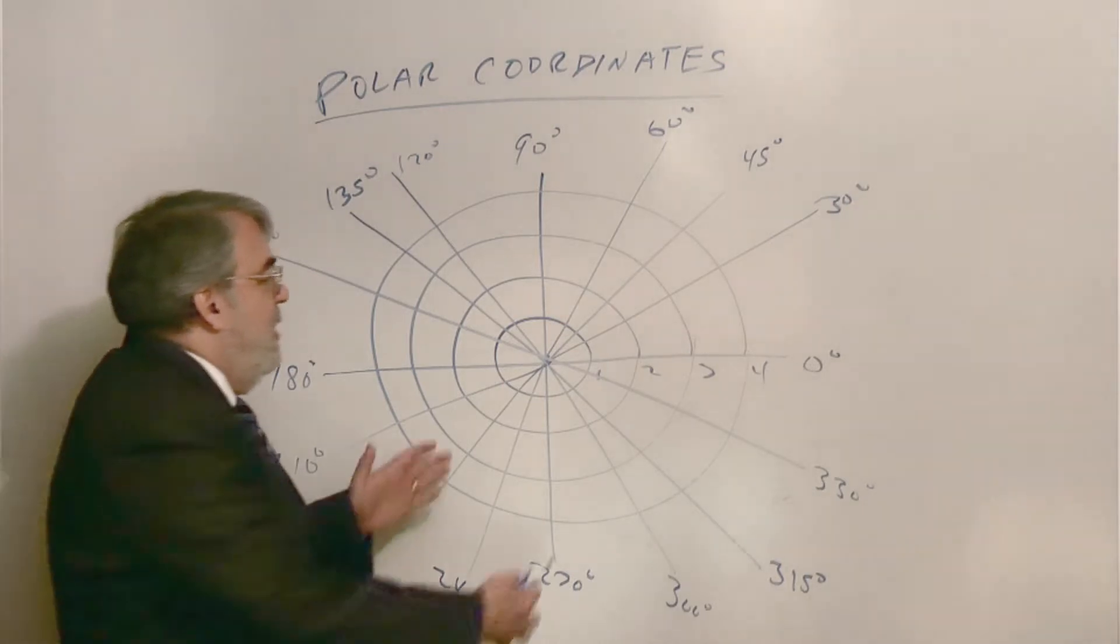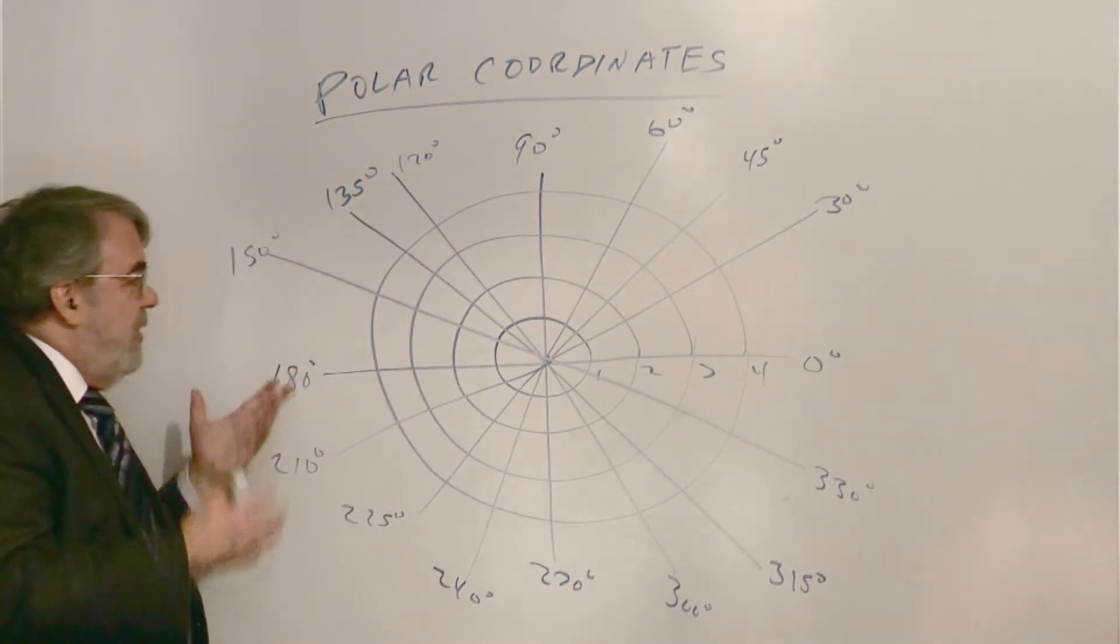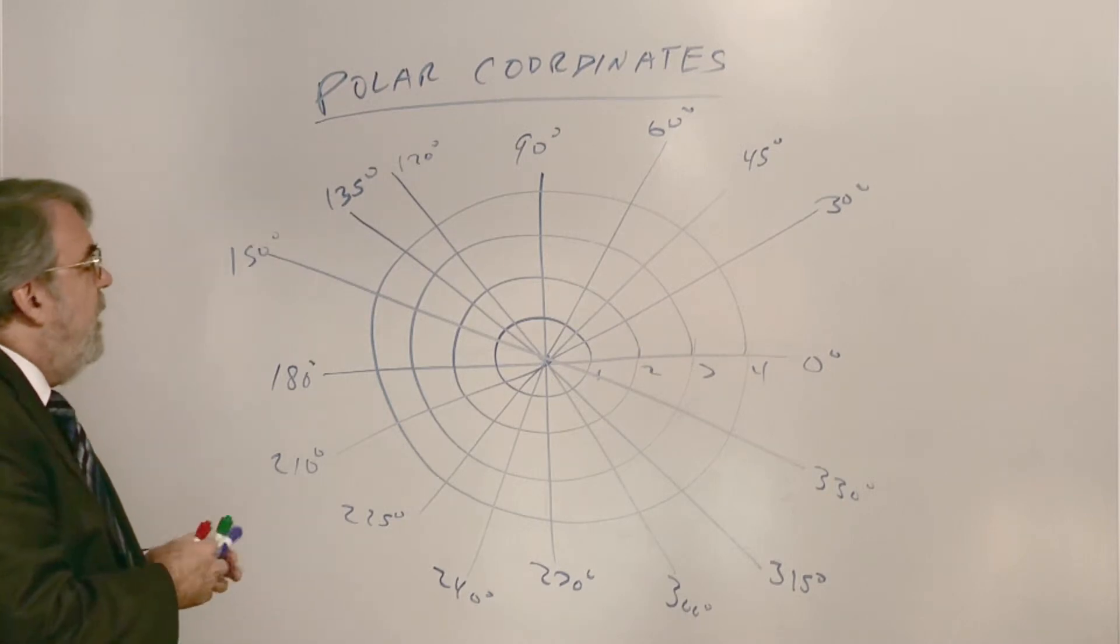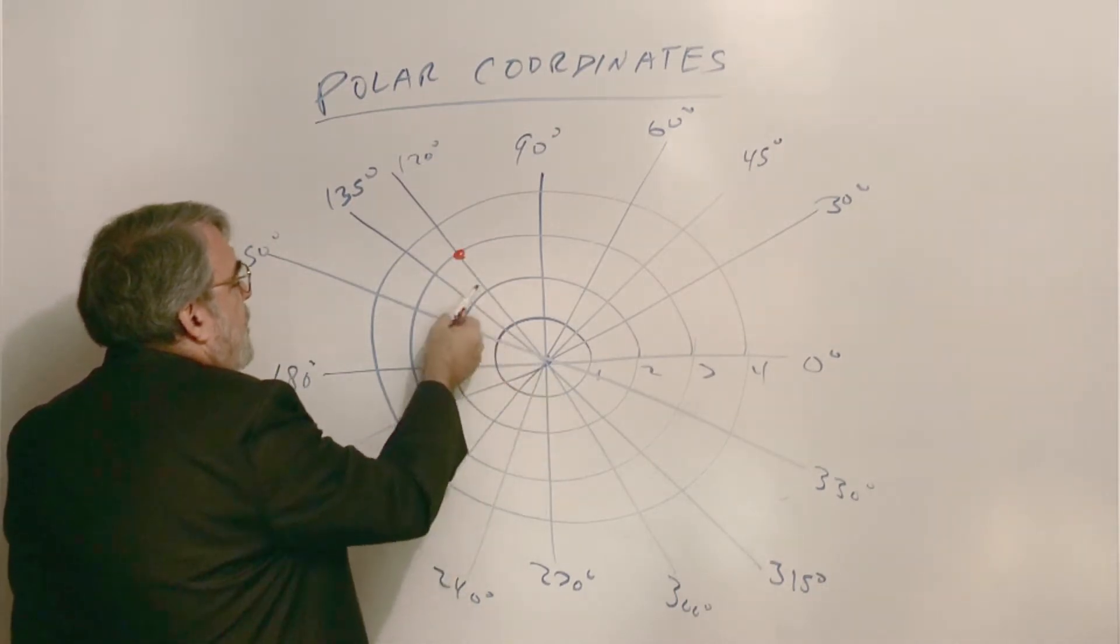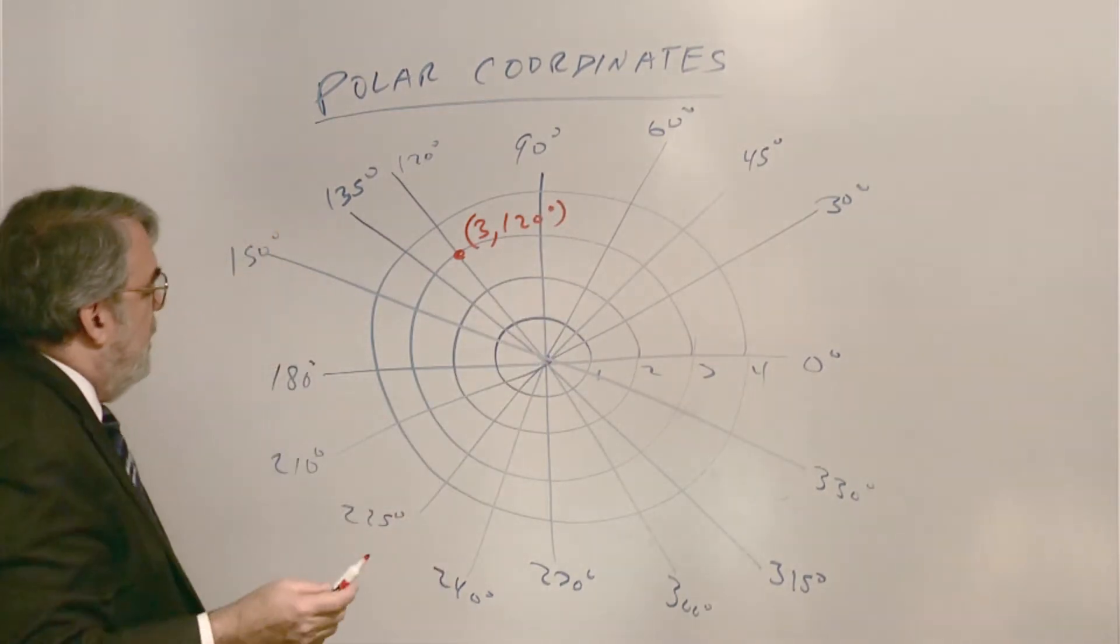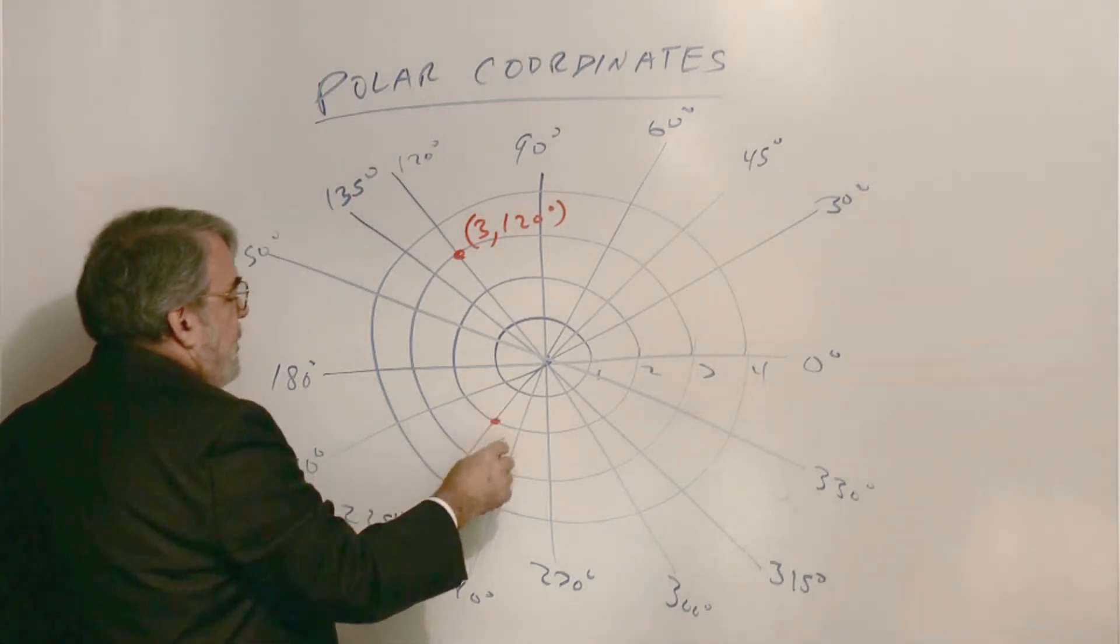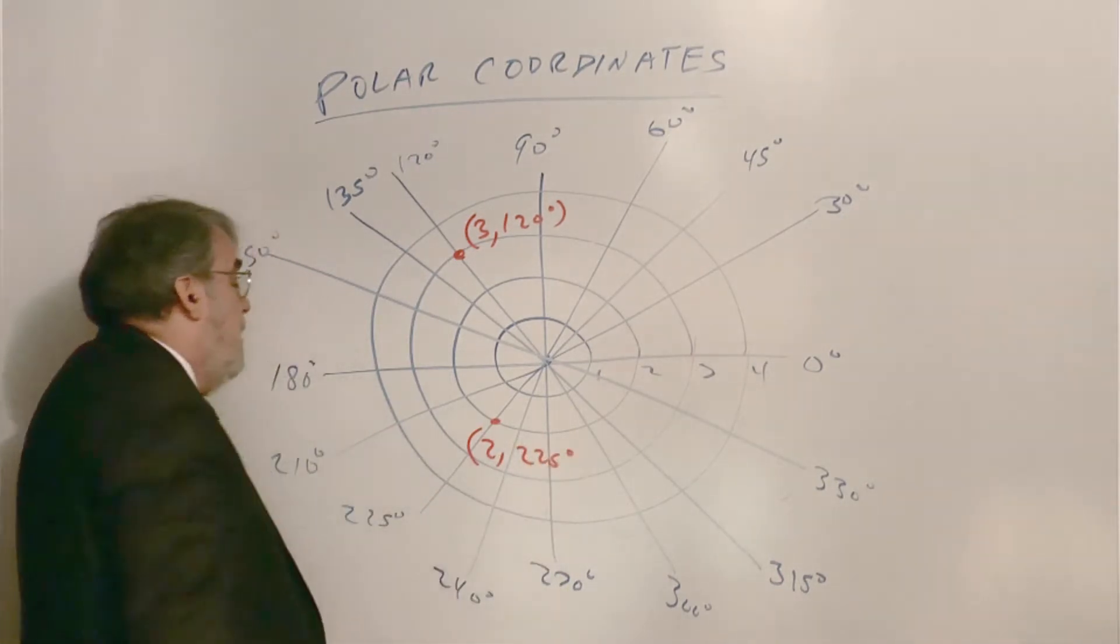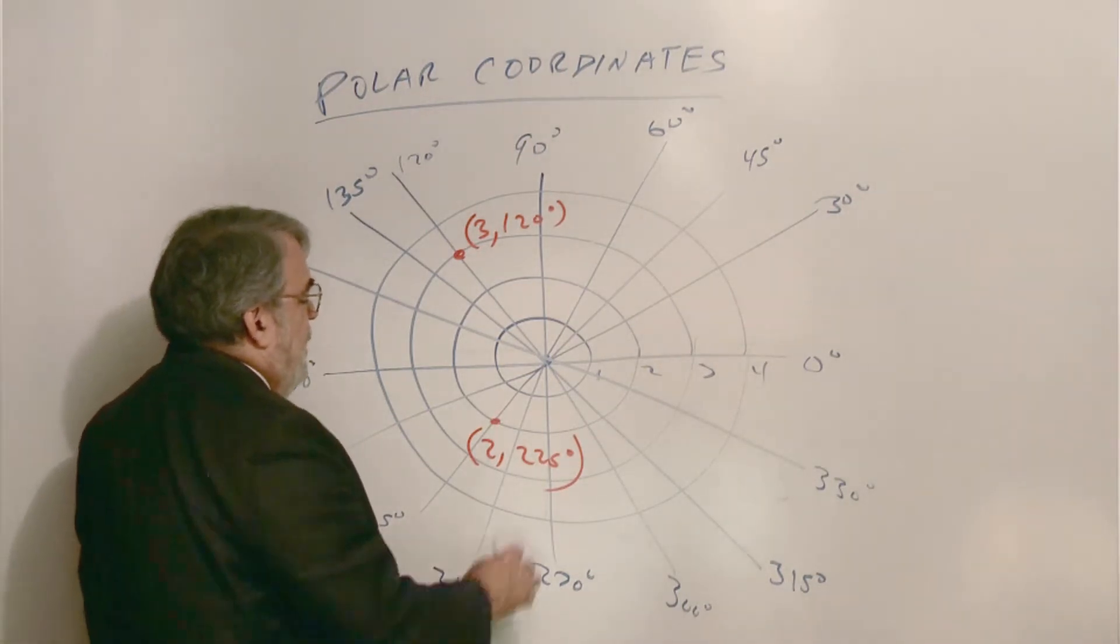It looks like a dartboard, doesn't it? Polar graph paper looks like this, and it comes in various sizes and configurations. You may have more concentric circles, you may have a lot more angles on there. This is a rather simple looking one. So that's polar graph paper. And here's a point on polar graph paper. What would this be? This would be one, two, three comma 120 degrees. How about this point over here? This is two comma 225 degrees.